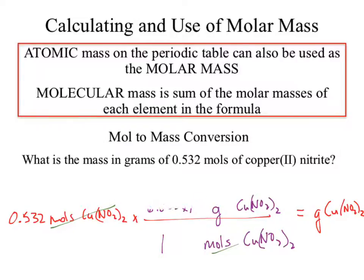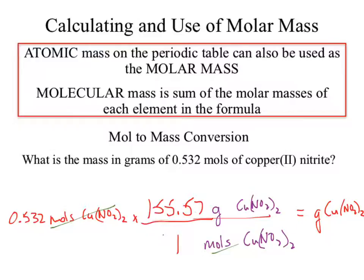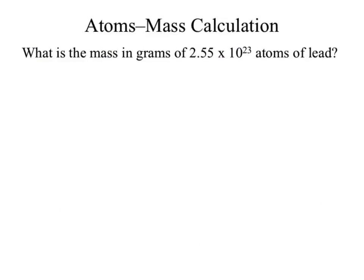If I use the full unit, it can lead me down the correct path. The instant I start taking shortcuts and not using the full unit — both the measurement and the substance — I can start getting sidetracked into weird conversions. Use the full unit to keep it clean. New problem: what is the mass in grams of 2.55 times 10 to the 23rd atoms of lead?